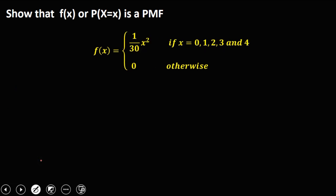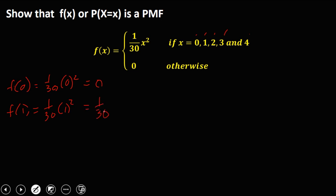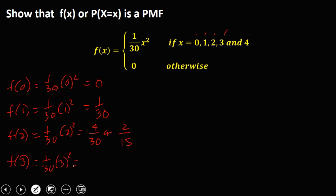For the second example, show that this one is a PMF. Substitute the values 0, 1, 2, 3, and 4. Starting with f(0): 1 over 30 times 0 squared, which is 0. Then f(1): 1 over 30 times 1 squared, which is 1 over 30. Then f(2): 1 over 30 times 2 squared, which is 4 over 30, or 2 over 15. Then f(3): 1 over 30 times 3 squared, which is 9 over 30.